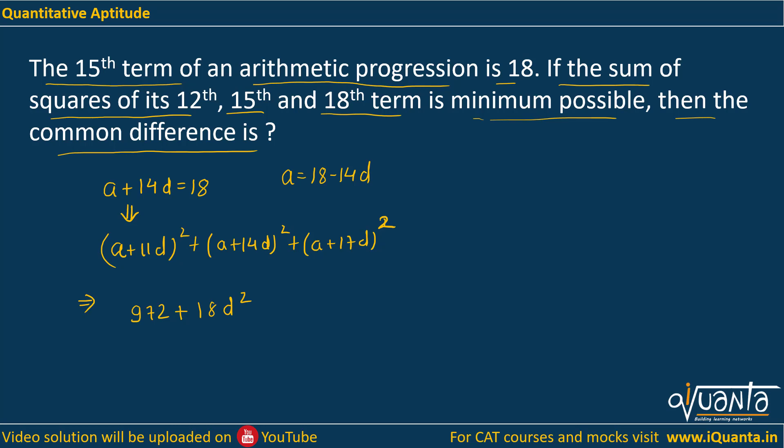Now you want to minimize the value of this, so we can directly put d equals to 0. Now many people might be wondering how can we take d equals to 0? How can a series be an arithmetic progression with difference equal to 0?